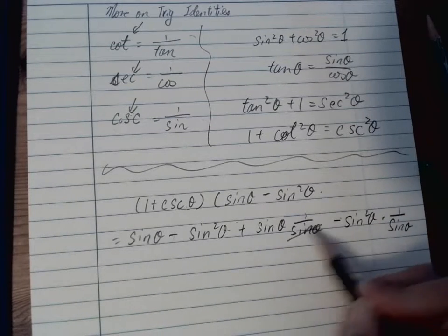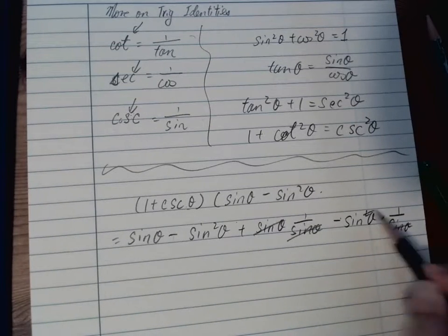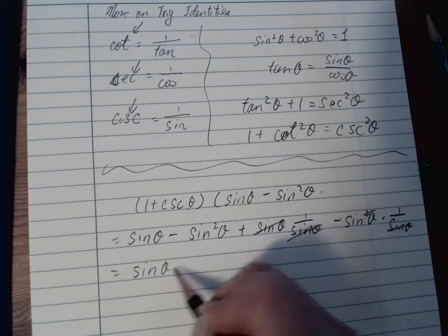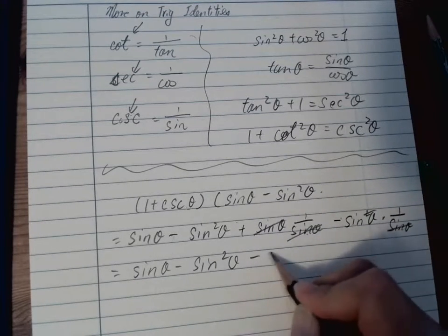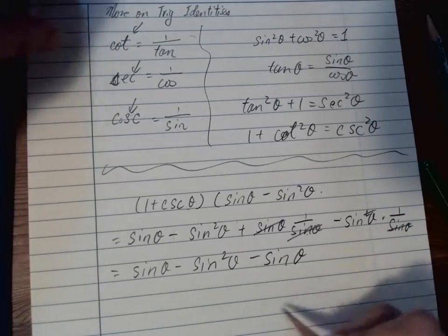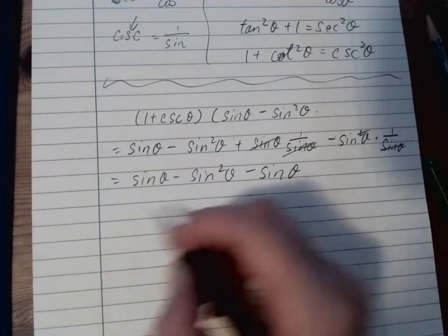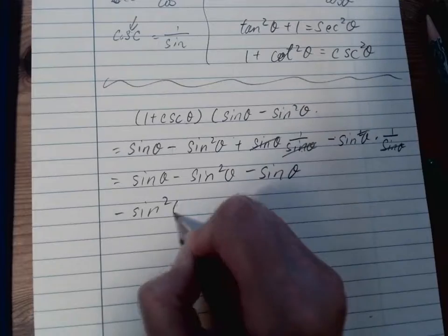And then you just simplify it. So this becomes 1 and this becomes sin. So we have sin theta minus sin squared theta. This is gone, and minus sin theta.